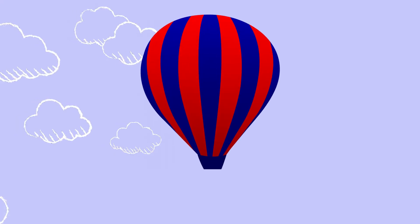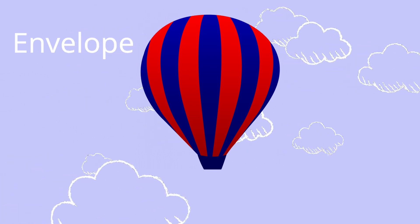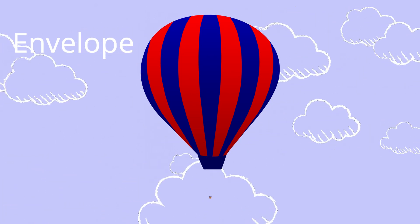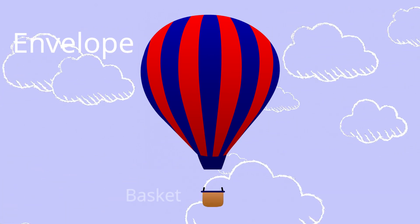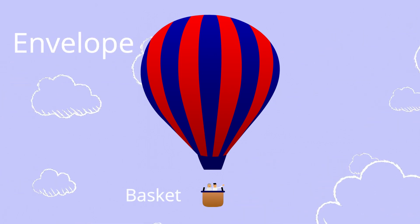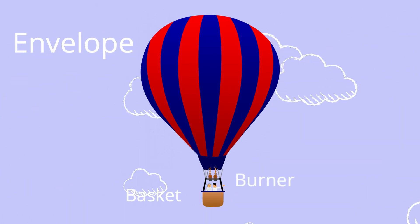Now let's take a closer look at the parts of the hot air balloon. First, we have the balloon or the envelope, which carries the air inside. Then we have the basket, where the pilot and passengers stand. And don't forget the burner, which keeps the air toasty warm.